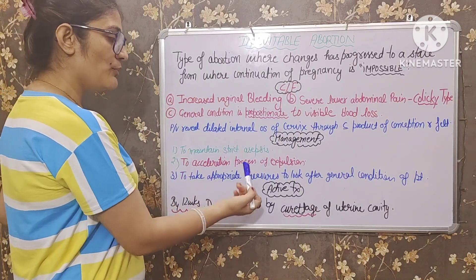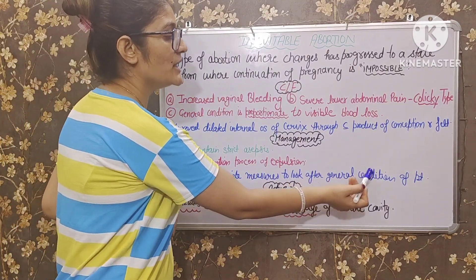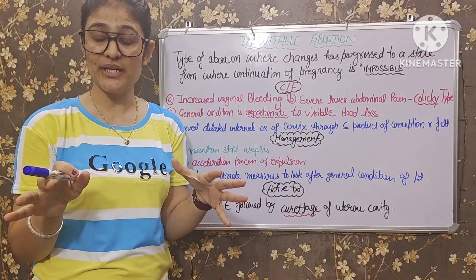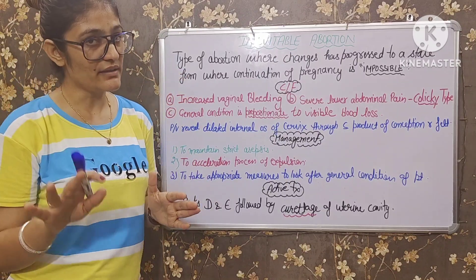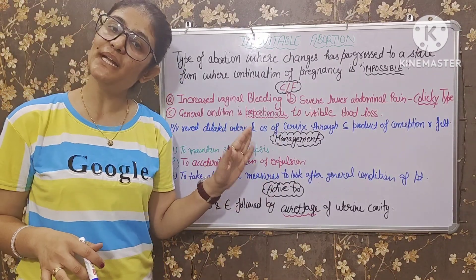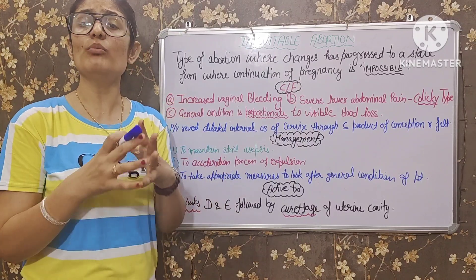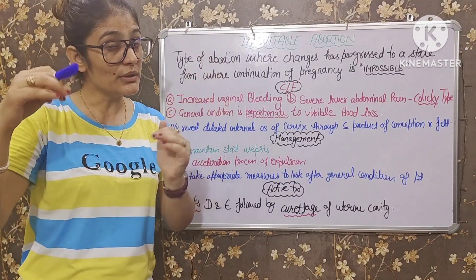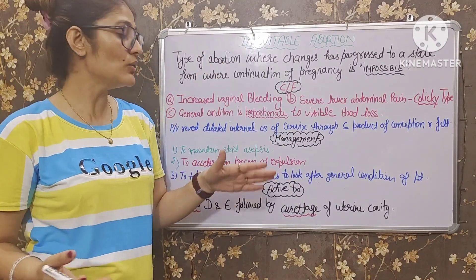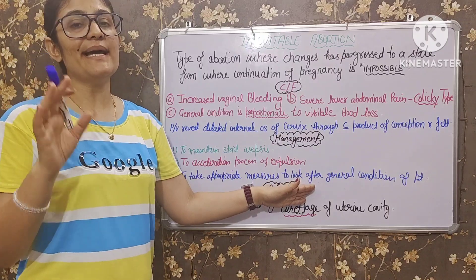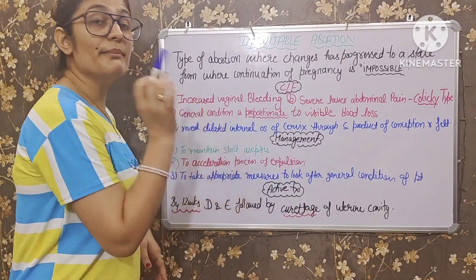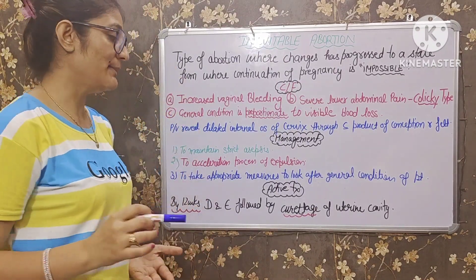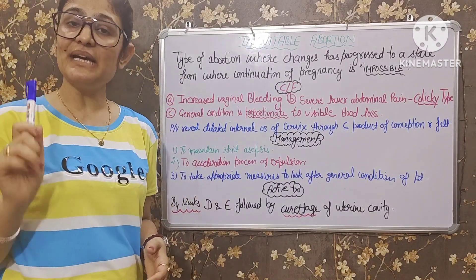Third: take appropriate measures to look after the general condition of the patient. Jaisi patient ki general condition hai, uske hisaab se appropriate measures bhi lene hain. Patient ko bahut severe pain hai, bahut zyada blood loss ho raha hai, general condition low hoti ja rahi hai — toh hume appropriate action lena hoga. Active treatment kya hoga?